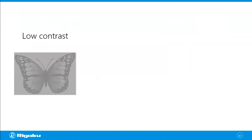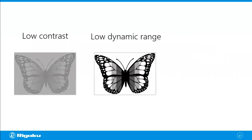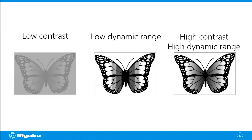Now what about contrast? This is a low contrast image — you don't have much variation in the gray level, making it difficult to see features. This image is high contrast but has its own problems: you only have four levels of gray — black, dark gray, light gray, and white — to describe density differences. That's not enough dynamic range. What you want is a high contrast, high dynamic range image.